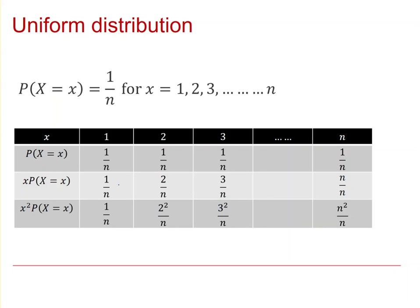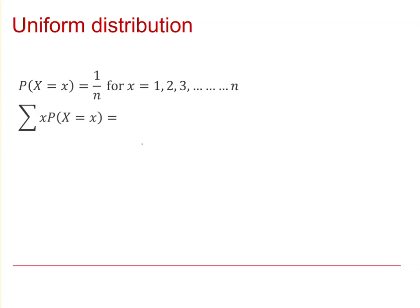To find the mean of this uniform distribution, we're simply going to add up all the values in this second row of the table. So to do that we're going to write one over n plus two over n plus three over n, and so on all the way up to n over n.